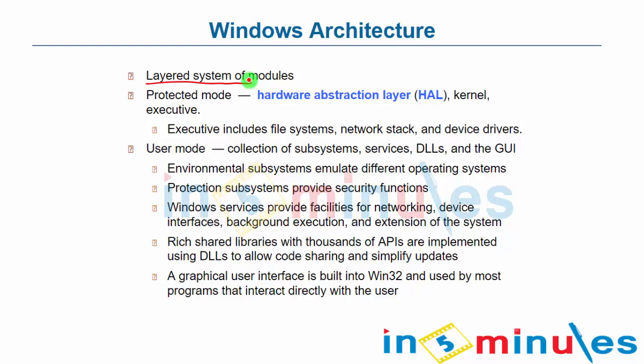So in Windows 7, what do we have? In the layered architecture, we have two things: one is protected mode, where kernel-level layers are used, and the second is user mode. Protected mode would be more on the OS side, while user mode would be more on the application side.